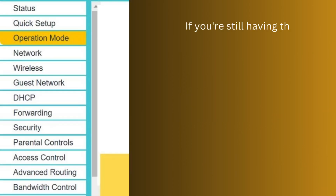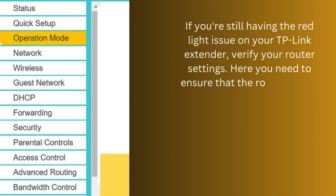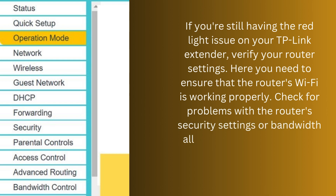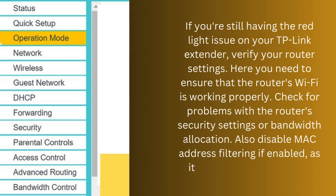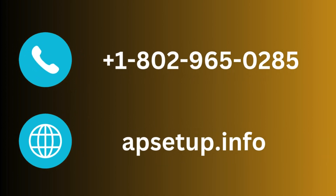If you're still having the red light issue on your TP-Link extender, verify your router settings. Ensure that the router's Wi-Fi is working properly and check for problems with the router's security settings or bandwidth allocation. Also disable MAC address filtering if enabled, as it may block the extender.